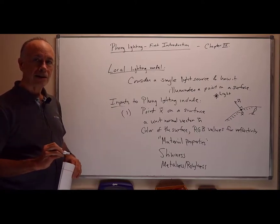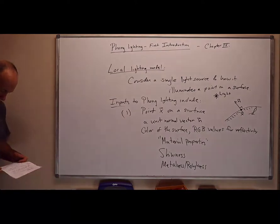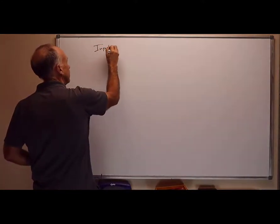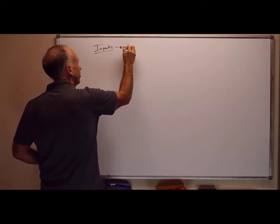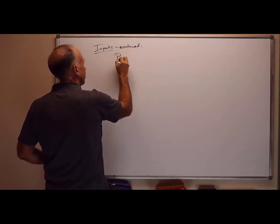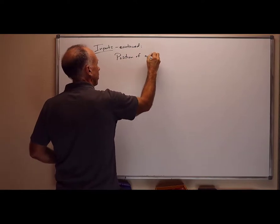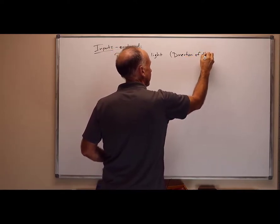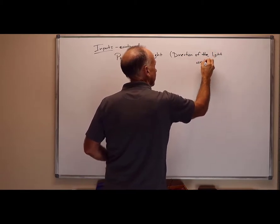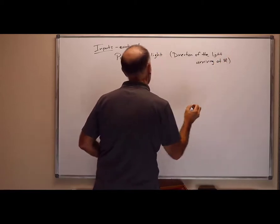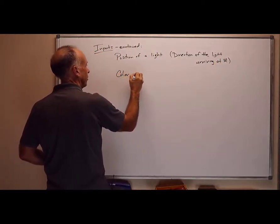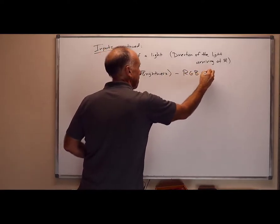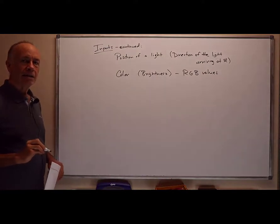The second set of inputs is properties of light. These include the position of a light, the direction the light is coming from when it hits x — the direction when it's arriving at the point x — and the color of the light, or the brightness, which is how much light is being emitted. This is usually given with RGB values.